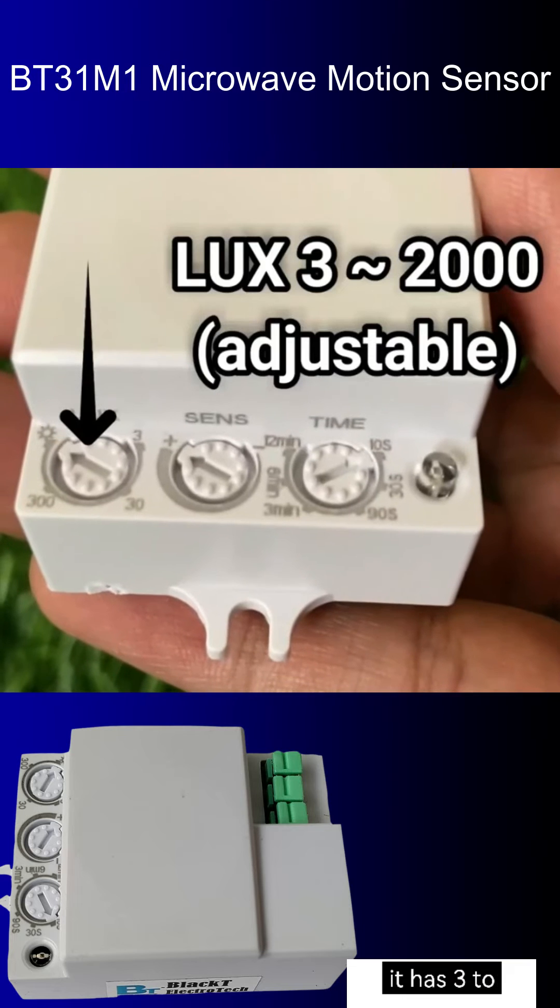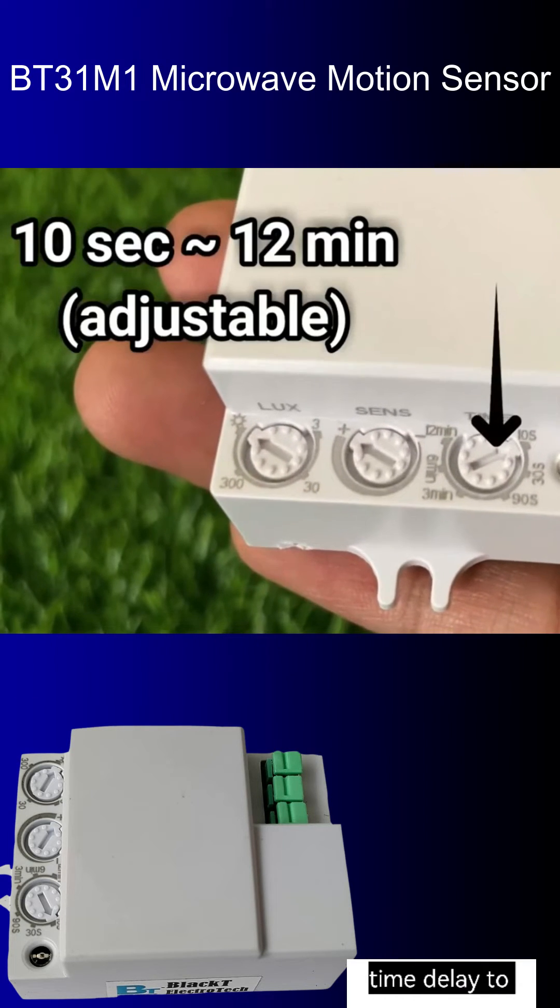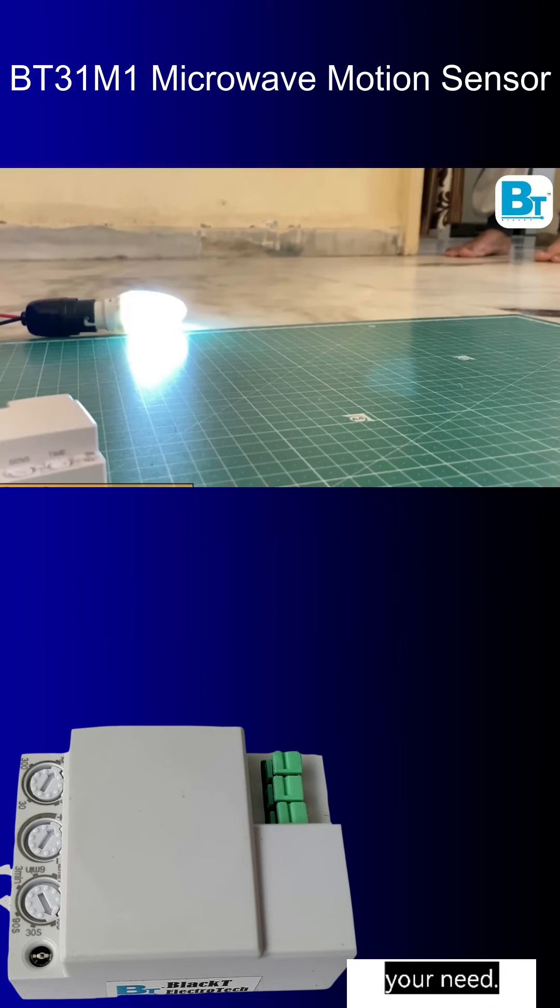For day and night operation, it has 3 to 2000 lux adjustment setting. You can adjust time delay to off the light from 10 second to 12 minutes according to your need.